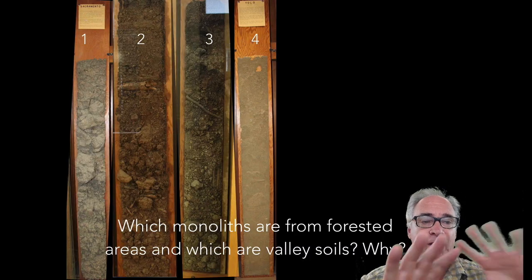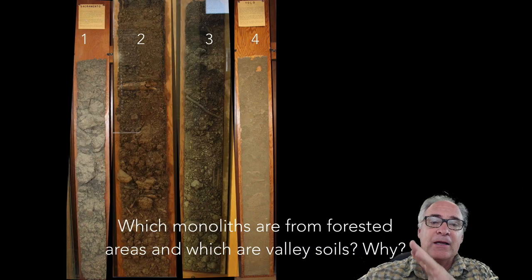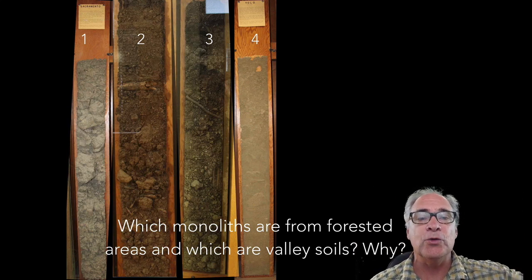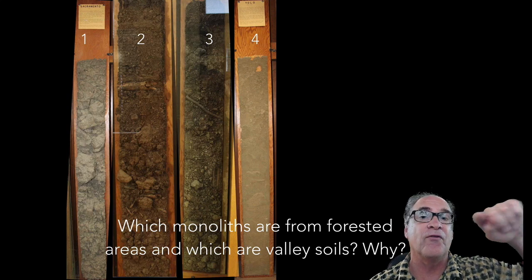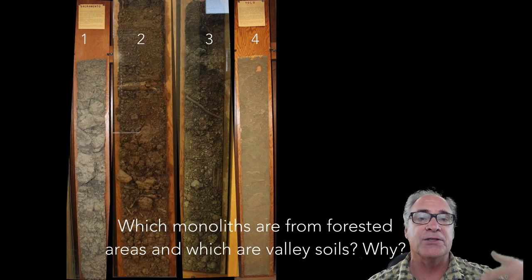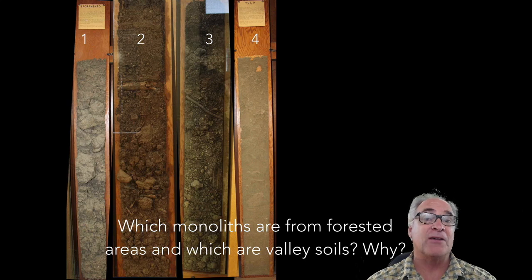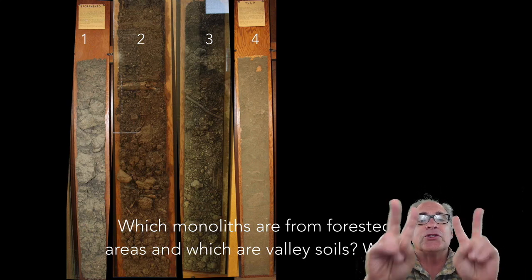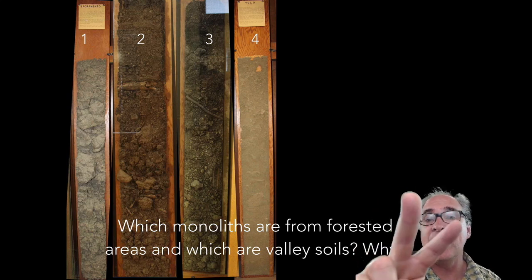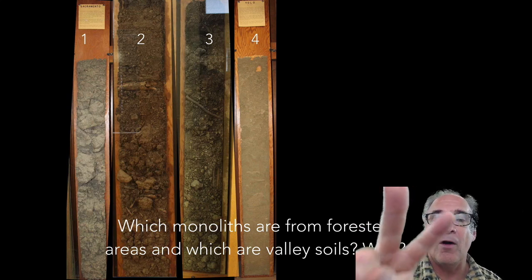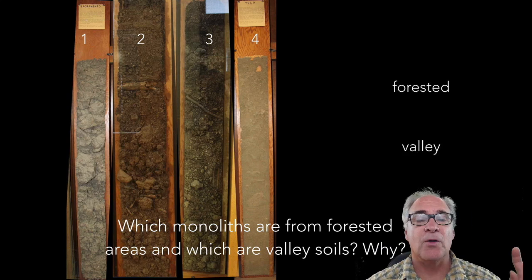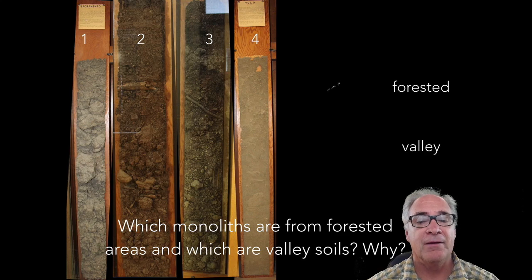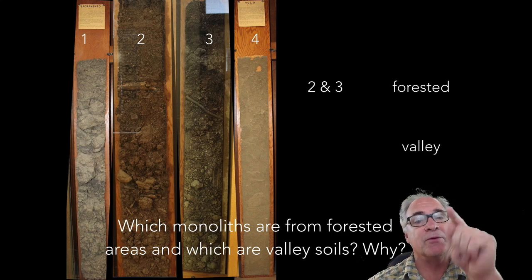We have four soil types here from California, particularly around the central valley area. Can you tell me which ones are from forested areas — areas that are high in organic matter and also have a lot more rain than the valley? Take a second and tell me which two are from the valley and which two are from the forested area. The answer: if you said two and three, you'd be right.